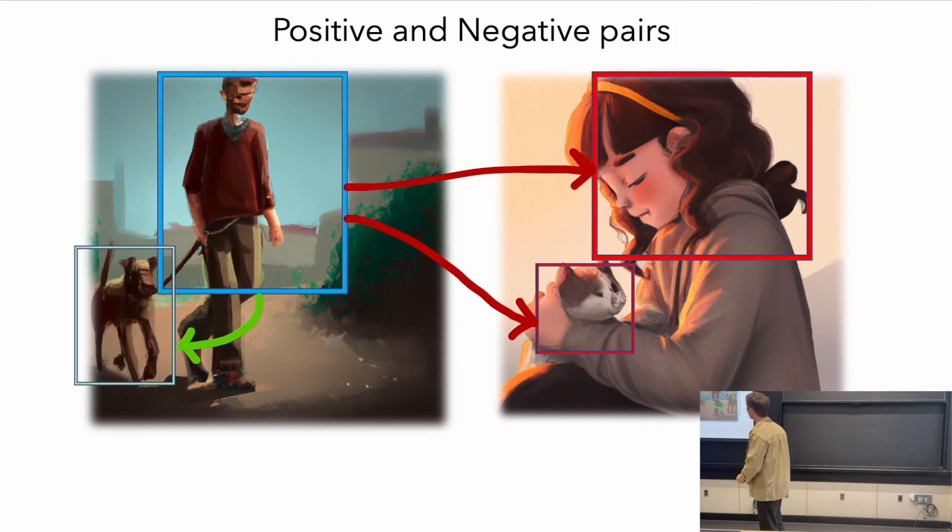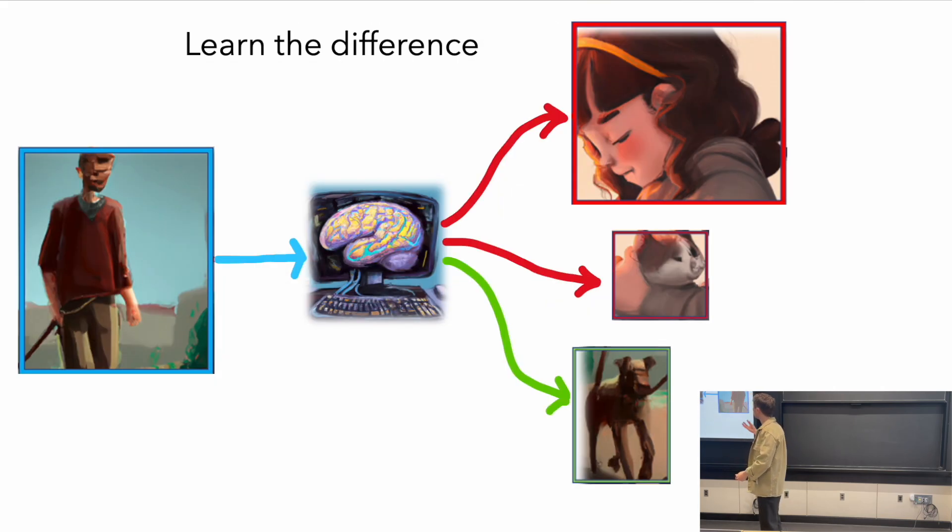More specifically, how the model is trained is that it's fed these different crops. It doesn't know which ones are paired and which ones are not paired. We only know that because we created the data, but the model doesn't know. That's how it learns. It's fed these options and we say, look at this crop of this human being with a leash. Now when you've seen this, tell me which one is its positive pair and which ones are its negative pairs.